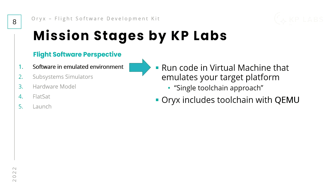We call this a single toolchain approach - you use the same target toolchain from the beginning of the project. We've been using the same toolchain for Intuition-1 for over three years now and are quite confident we've flushed out important errors - there were many, especially in the linker. If we switched to another toolchain before integration, we wouldn't have this confidence. Oryx comes with a toolchain for each platform we work with - Cortex-M, Cortex-R, Cortex-A, MicroBlazes, SPARCs, AVRs and many others.